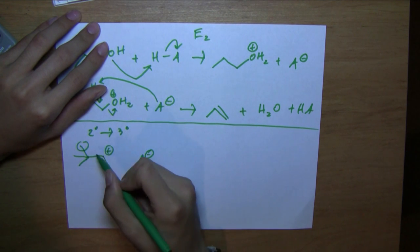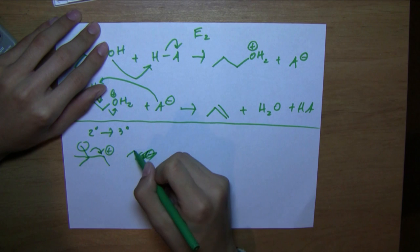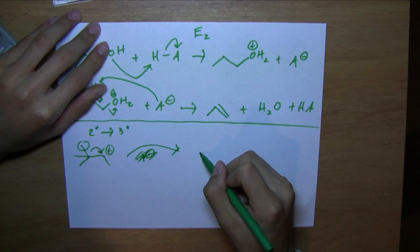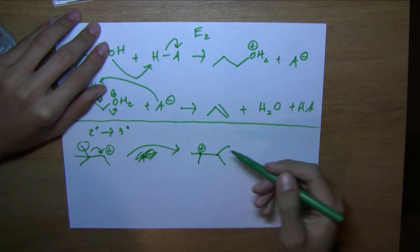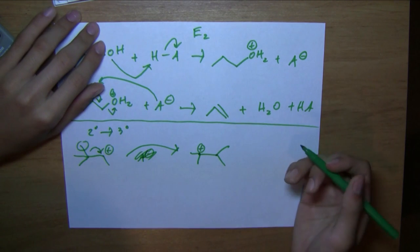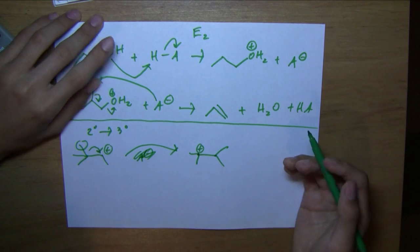Any kind of, any length of R group will work. So we have a methide shift, and basically it just goes like that. And it becomes a tertiary carbocation, which is much more stable, so this is preferred. So basically, if it can happen, it will happen.